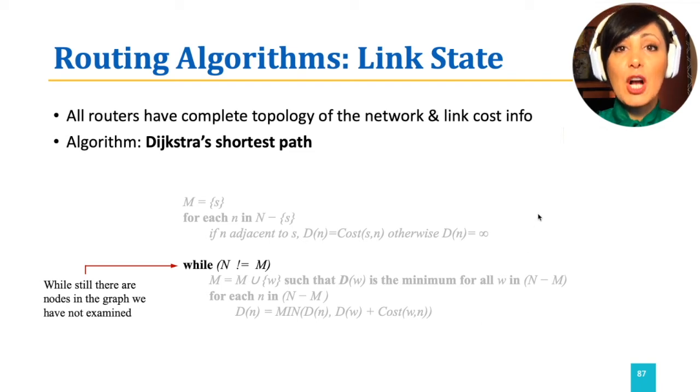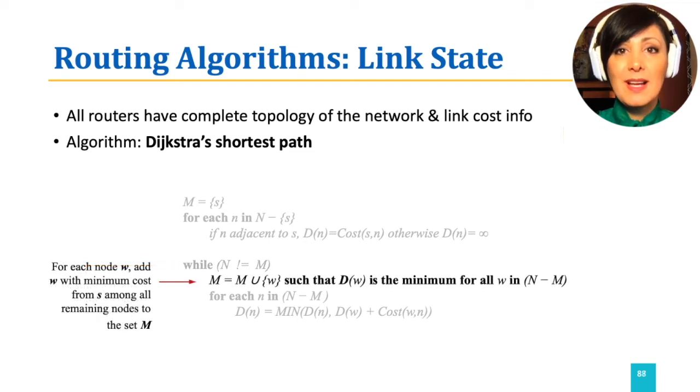For each unexamined node W, if cost of reaching W is minimum over all other unexamined nodes, we add W to the examined set.